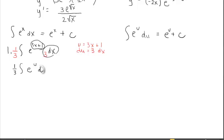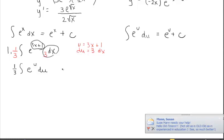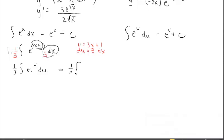The 3 dx becomes du. Working to the right: one-third, we drop the integral symbol since we perform the calculation. E to the u integrates back to e to the u, and substituting back, u is 3x plus 1. You can leave the answer with e to the u then substitute, or combine steps. You can also write it as a fraction.